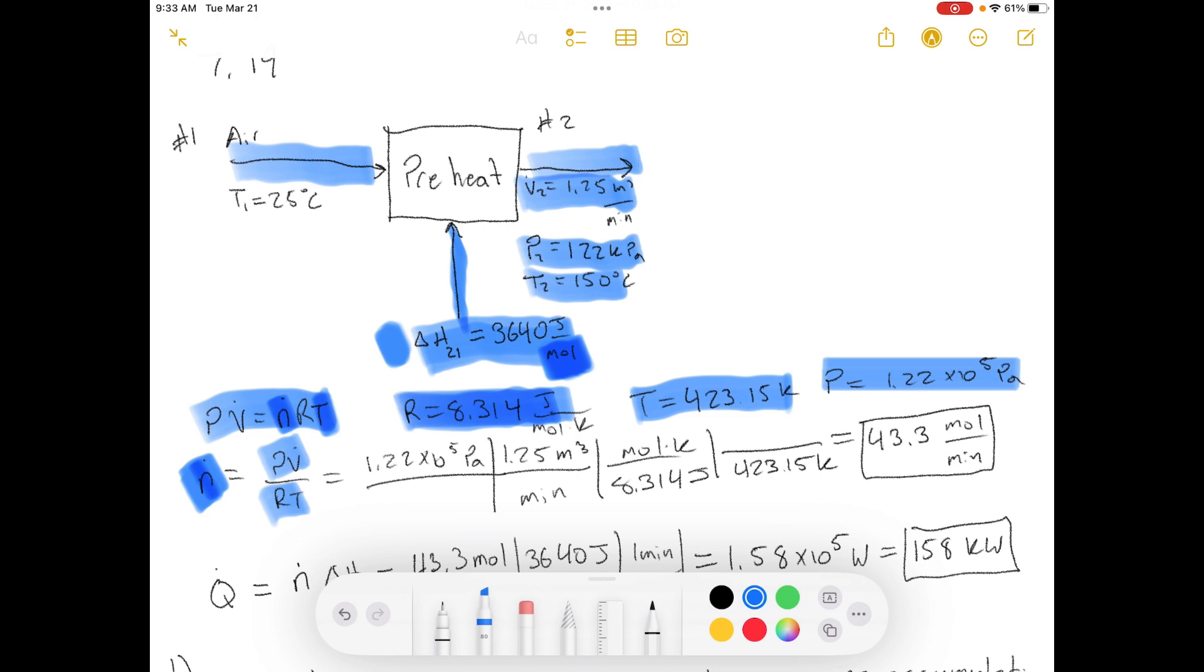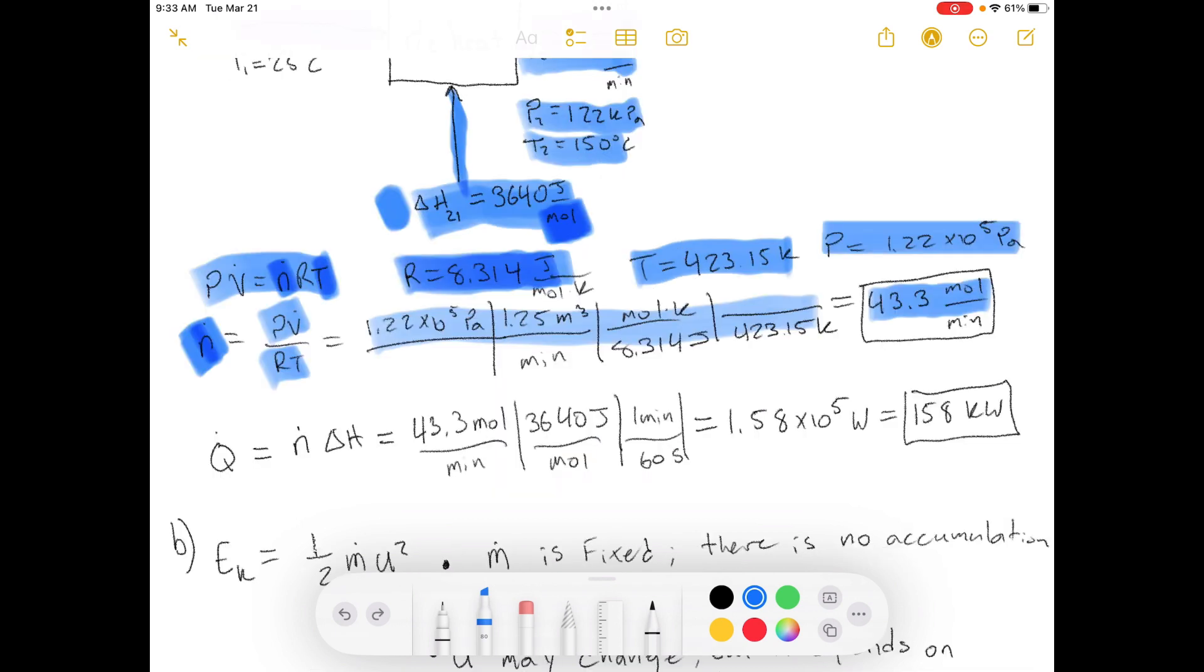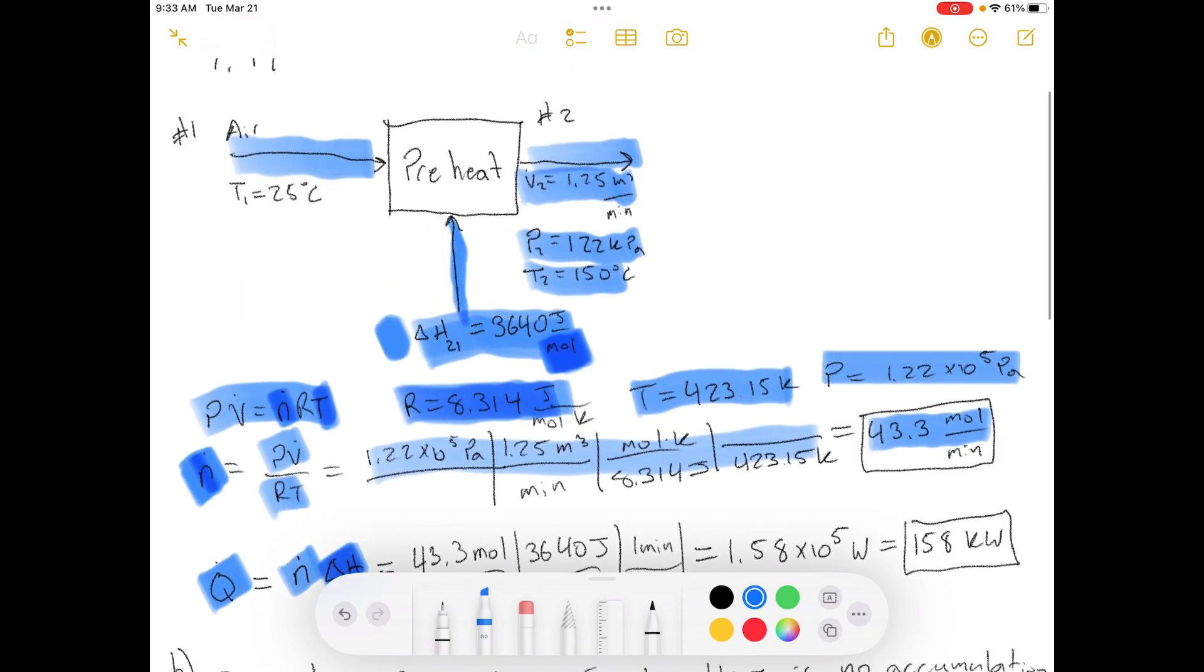So then we calculate our molar flow rate from all these values, and we get a molar flow rate of 43.3 moles per minute. So how do we calculate our heat requirement? Well, our heat requirement is equal to our molar flow rate times the change in enthalpy, because the enthalpy is the amount of energy that it takes to change this enthalpy into this enthalpy.